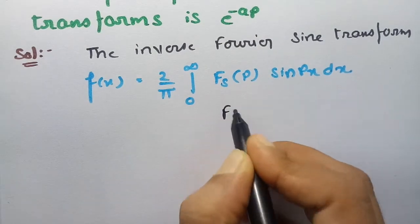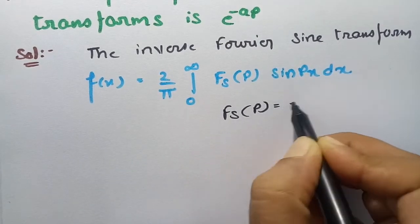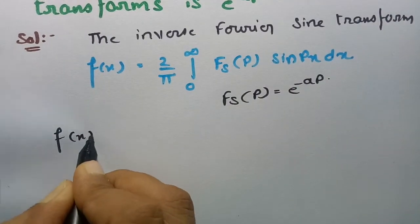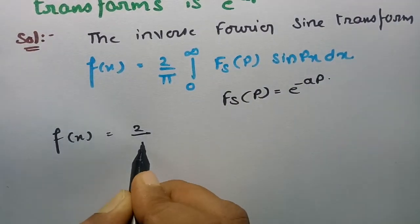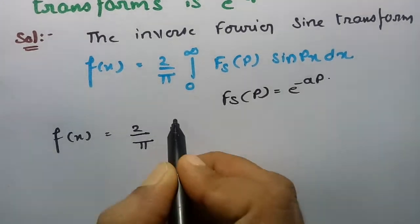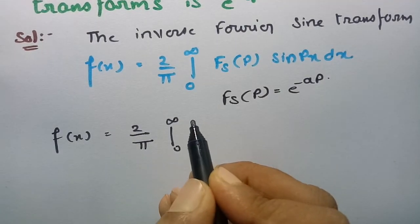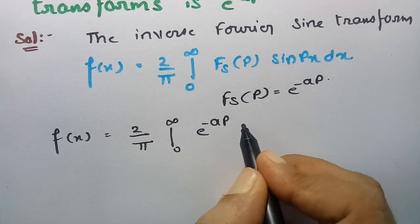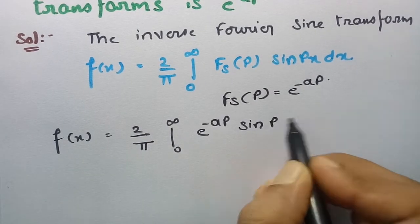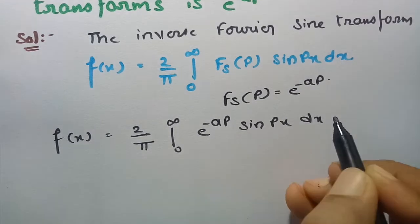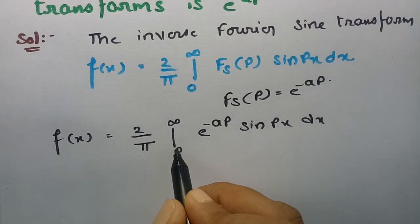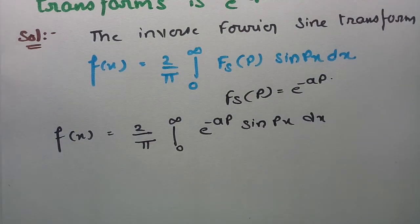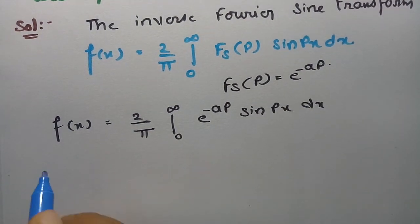Therefore, Fs(p) = e^(−ap). Substituting this, f(x) = (2/π) times the integral from 0 to infinity of e^(−ap) · sin(px) dp. This integral is of the form: integral from 0 to infinity of e^(−ap) · sin(px) dp.